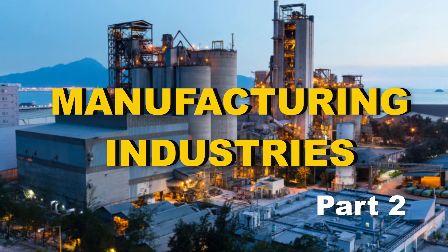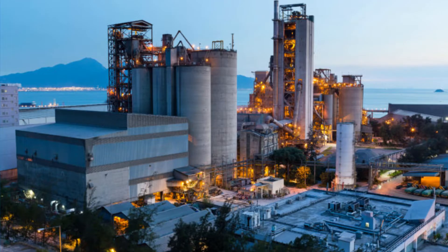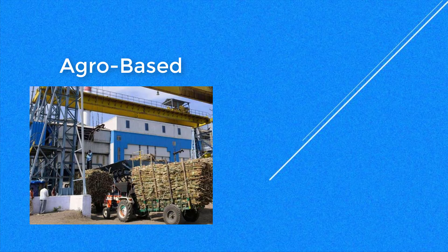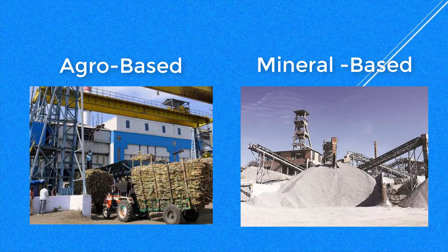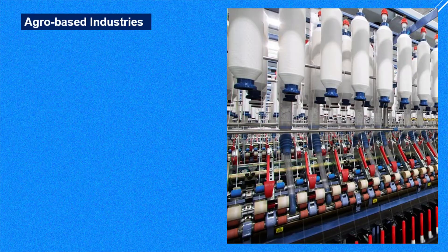In the second part of the chapter we shall learn about industries. Broadly, in India industries can be divided into agro-based industries and mineral-based industries. Among the agro-based industries we have the cotton textile industry, jute industry, and sugar industry.